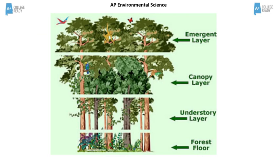In this diagram, the layers of a tropical rainforest are shown. The forest floor is characterized by shade-loving plants since light doesn't penetrate to this layer very well. The understory is characterized by vines and climbing plants. The canopy layer is where most animals are found, and the emergent layer is characterized by tall trees.